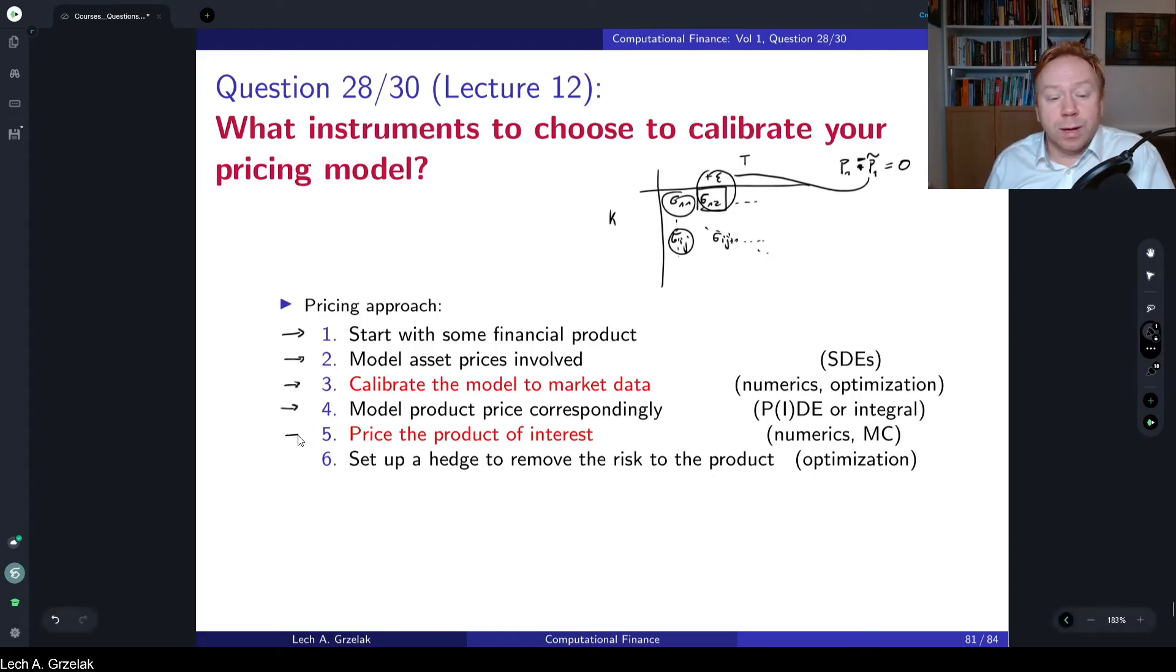Then we go to the next point where we actually evaluate our exotic derivative. This means we apply numerics, whether it is with PDEs or numerics with Monte Carlo, where we discretize our problem and implement it in Python or Matlab. Then we can actually get our option price. The final point is to manage our risk. At point number five we have a price of derivative, but then in point number six we have to hedge.